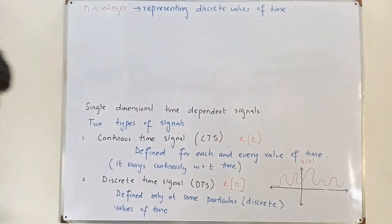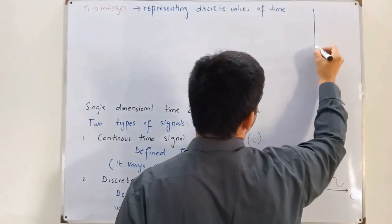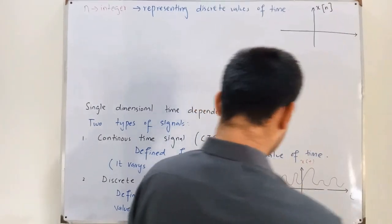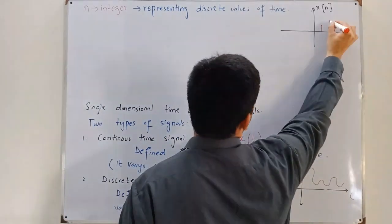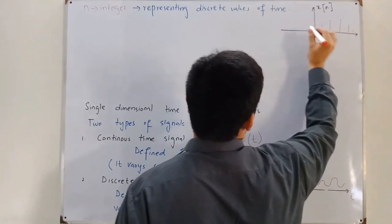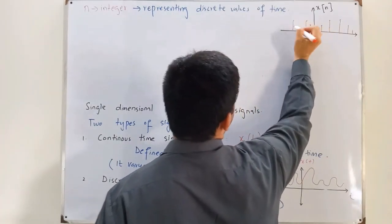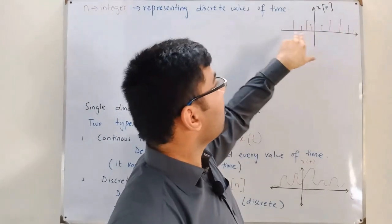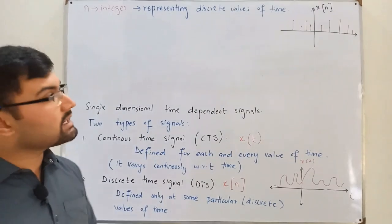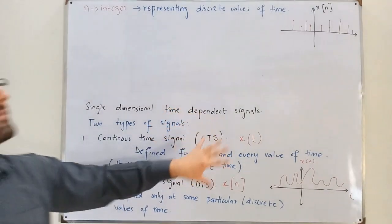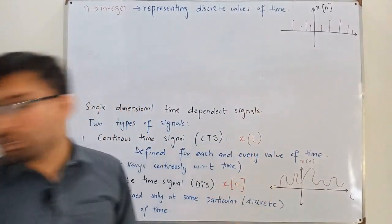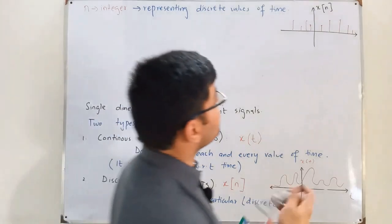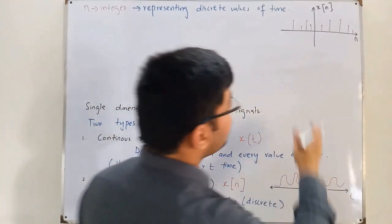If I draw x[n], it has a value at some points and other values at others, but it is not continuous — it is not defined over the entire time axis. It is defined only at particular values of time. A signal defined only at particular points of time with no continuity is called a discrete time signal. The independent variable here is n.